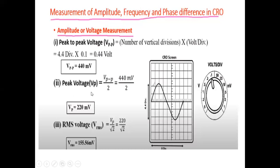The peak voltage or amplitude of the waveform is Vp = Vpp / 2 = 440 millivolt / 2 = 220 millivolt. This is your peak voltage found from the CRO screen. We can also find the RMS voltage using the formula: Vrms = Vp / √2 = 220 millivolt / √2 = 155.56 millivolt.